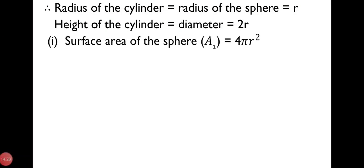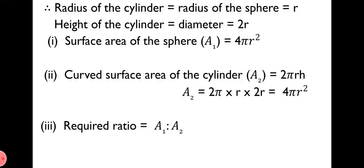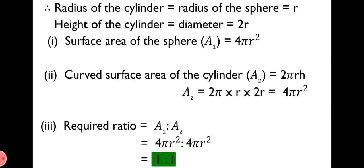Question 1: Surface area of the sphere A1 = 4πr². Question 2: Curved surface area of the cylinder A2 = 2πrh = 2π × r × 2r = 4πr². Now, required ratio = A1 : A2 = 4πr² : 4πr² = 1:1. Hence, the ratio of surface area of the sphere to curved surface area of the cylinder is 1:1.